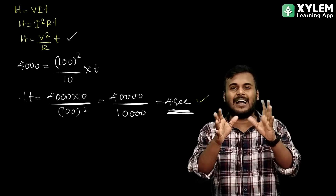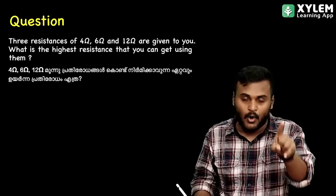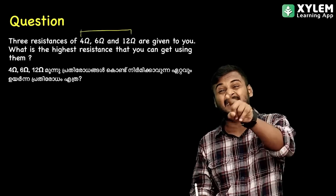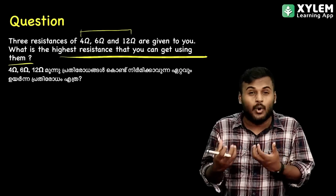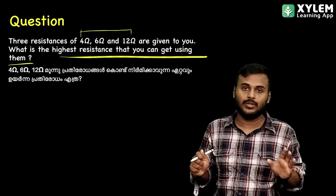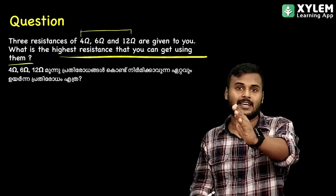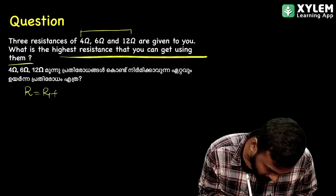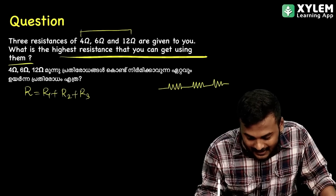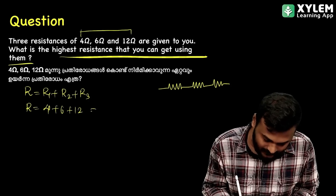The second question: 3 resistors of 4 ohm, 6 ohm, and 12 ohm are given. What is the highest resistance that can be made using them? To get the highest effective resistance, we have to connect them in series. Series connection: R equal to R1 plus R2 plus R3. We have to connect everyone in series.